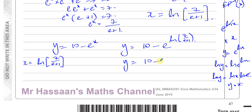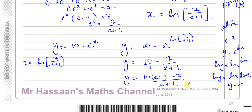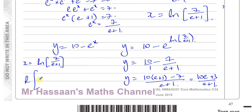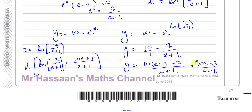Writing y as a single fraction: y equals 10(e plus 1) minus 7 over (e plus 1), which is 10e plus 10 minus 7 over (e plus 1), giving (10e plus 3) over (e plus 1). So the coordinates of R are ln(7 over (e plus 1)) for x, and (10e plus 3) over (e plus 1) for y.